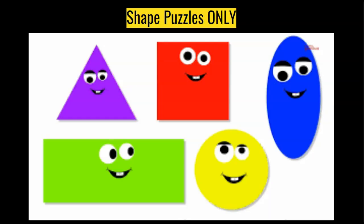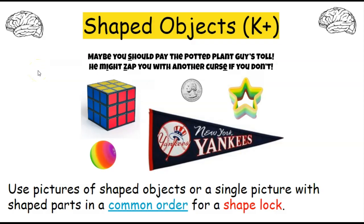The next puzzle is a shape-only puzzle — there's only one of this kind. This is the shaped objects puzzle, appropriate for kindergarten and up. It's a mental puzzle so it works for both digital and physical breakouts. You use pictures of shaped objects or a single picture with shaped parts in a common order for a shape lock. Here we have five objects: a square, two circles, a star, and a triangle. The word SIZE is underlined, telling students they'll need to use size for the order, though they must figure out whether it goes small to large or large to small.